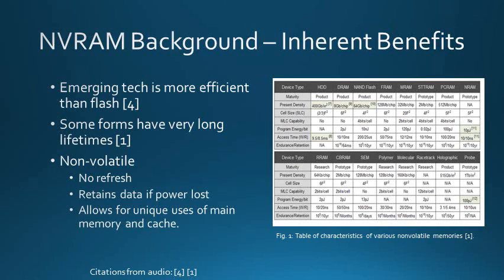While NVRAM has recently seen a great increase in attention, it has long been a focus of computer researchers for several reasons. First, NVRAM technologies offer advantages over flash due to the lack of need for full-page operations. Second, many forms of NVRAM have extremely high write endurance. Finally, NVRAM is non-volatile. This prevents the need for bit refreshes, thus potentially saving an enormous amount of power compared to existing technologies. It also allows the data to be retained if power is unexpectedly lost, which opens up some very interesting and useful applications, such as efficient journaling and near-instant boot times. The figure on the right gives the physical characteristics of many different types of NVRAM, and serves as a good representation of their costs and benefits.